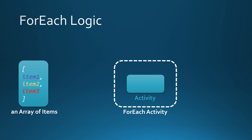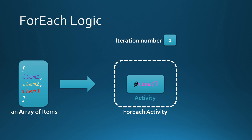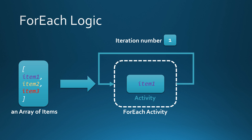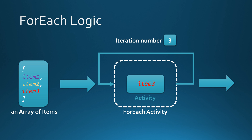I'm representing the items as item 1, item 2, and item 3 to simplify this example. Inside the activities in the ForEach, we reference these items with the @item() reference. This fetches the current item in the loop from the list. During iteration 1, the @item() reference will fetch item 1 from the array. After executing all activities, we start over — in iteration 2 we fetch item 2, and in iteration 3 we fetch item 3. After that last iteration completes, we are ready to continue forward from the ForEach activity.